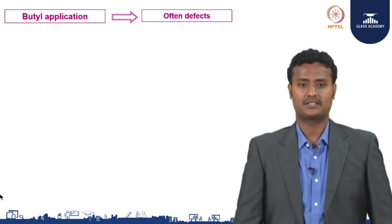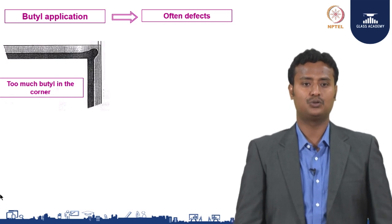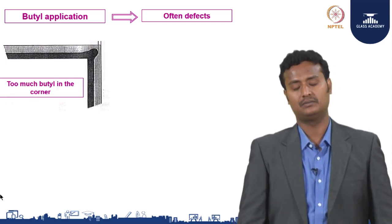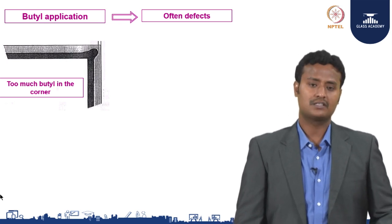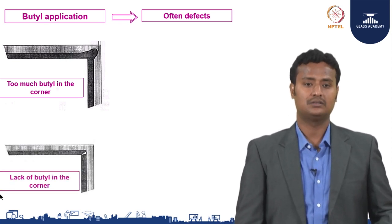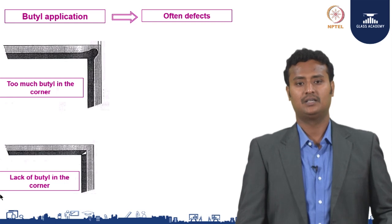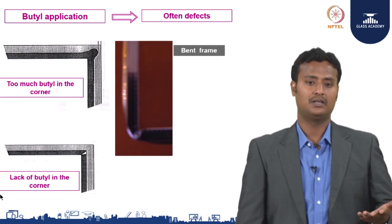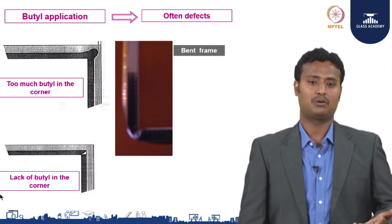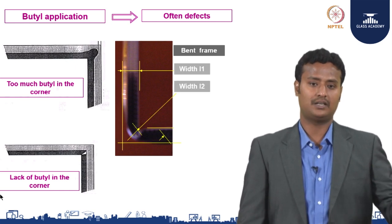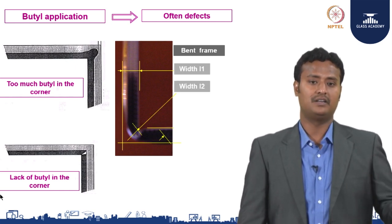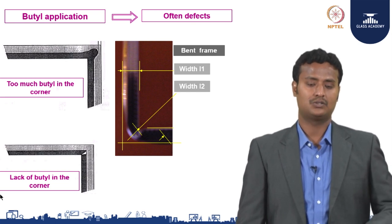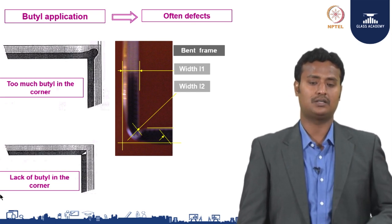Butyl application often has defects. Sometimes there is too much butyl in the corners, so corners must be handled very carefully. If it is too little or too much, either will be a problem — it has to be very uniform. You can see this is a bent frame, which will cause a problem. On the left-hand side and right-hand side there will be a difference in the primary sealant, which will have a different effect. It has to be uniform throughout the edges.